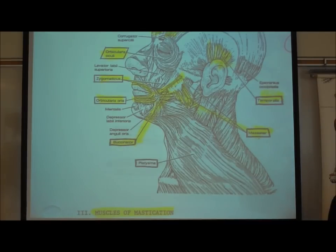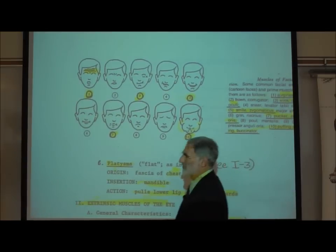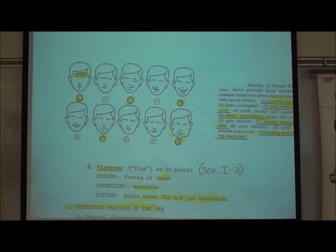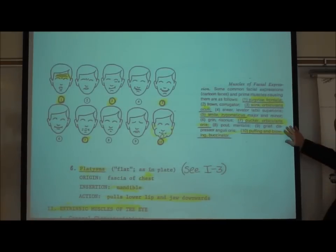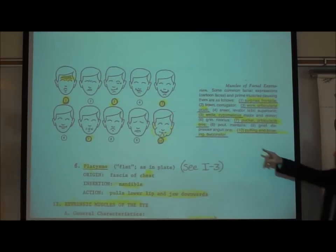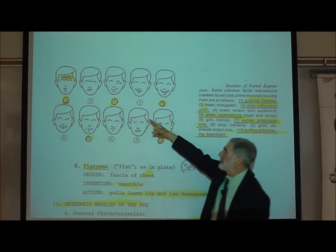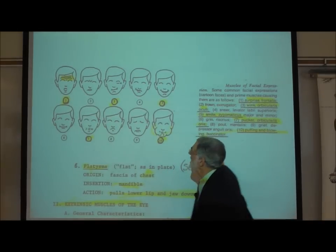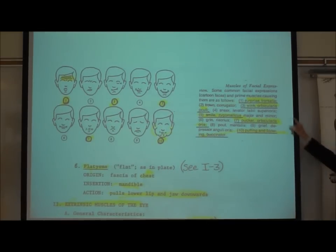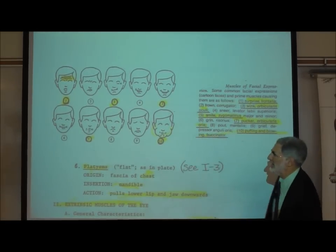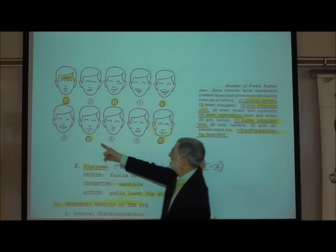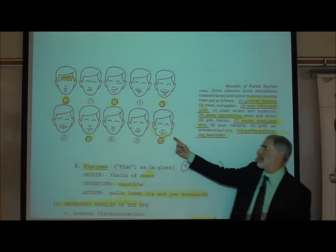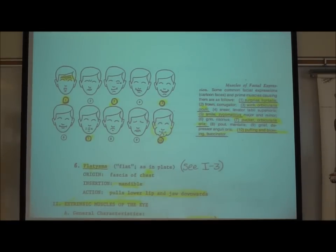On page I2, it has a different facial expression. The ones I've circled you should know. Number one shows the wrinkled forehead — that's the frontalis and the raised eyebrows. Number three, he's winking — that's the orbicularis oculi. Number five, he's smiling — that's the zygomaticus. Number seven, he's kissing with puckered lips — that's the orbicularis oris. And number ten with inflated cheeks, he's blowing — that's the buccinator.